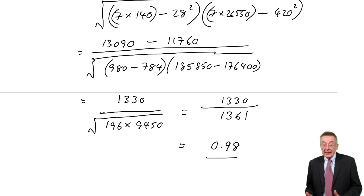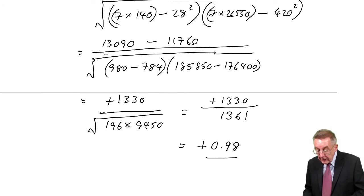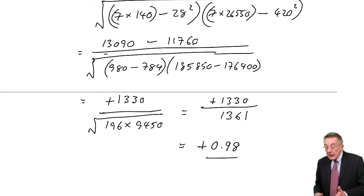And before I interpret that, one thing rather importantly, the top bit of the numerator of the equation here, 13,000 minus 11,000 was plus 1330. Our answer, therefore, is plus 0.98. Now, I'll explain the significance shortly, but you can end up with a negative number on the top. The top could have been minus 1330, the coefficient of correlation r would have been minus 0.98, and it does matter. But it's the top bit of the equation, the numerator, that determines whether it's positive or negative.